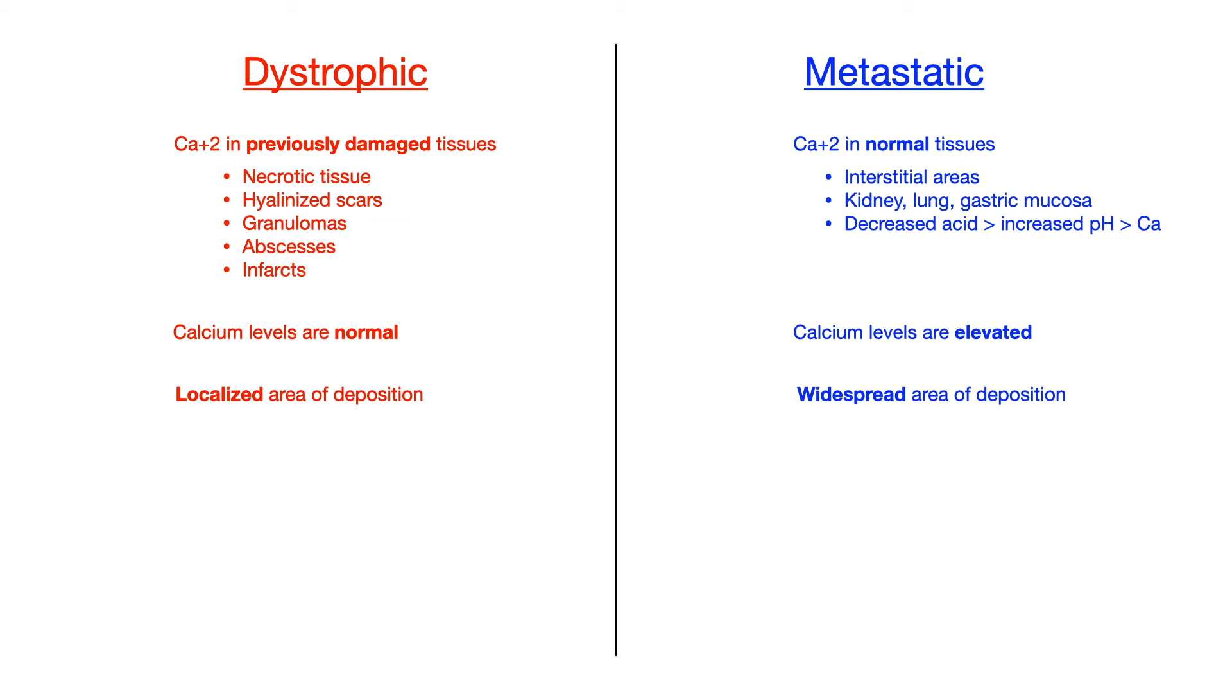Now these are really all of the high yield points that you need to know for the differences in the ability to compare and contrast dystrophic versus metastatic calcification. And I do have a little mnemonic here to help you out if this is not clear enough. For dystrophic calcification, we're going to focus on the letter D.